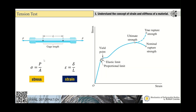Stress and strain define the strength of materials. Stress equals the amount of force applied on a certain area, while strain equals the amount of deformation relative to length. These two equations will be merged later. Let's look at the stress-strain diagram.